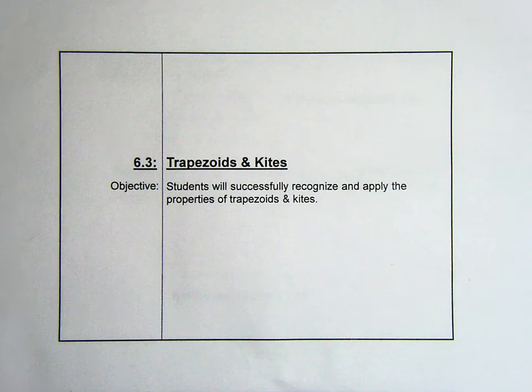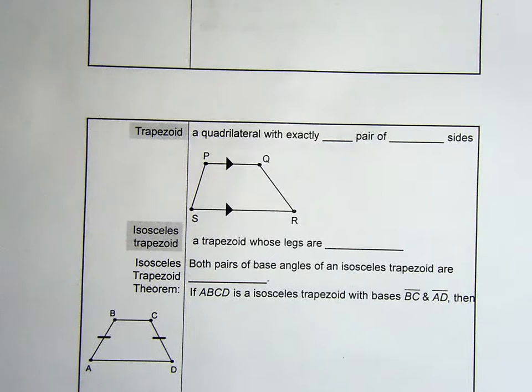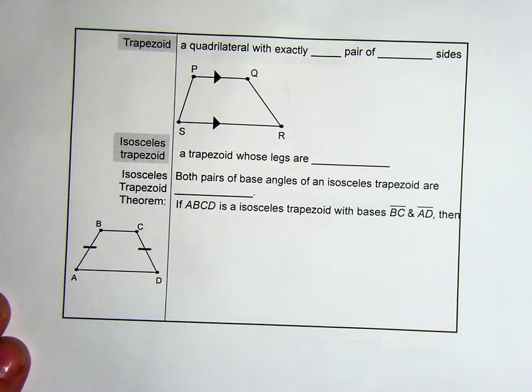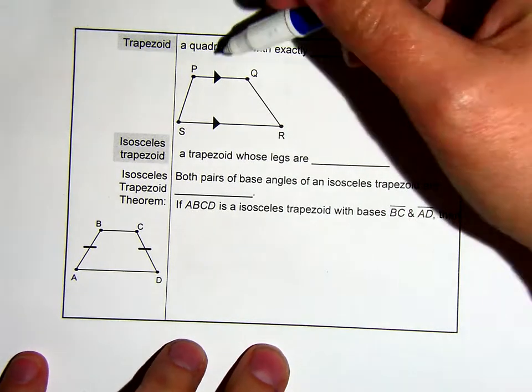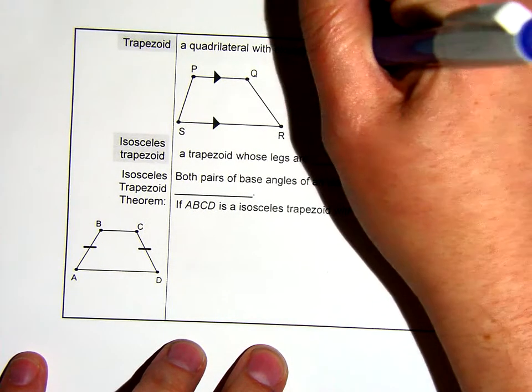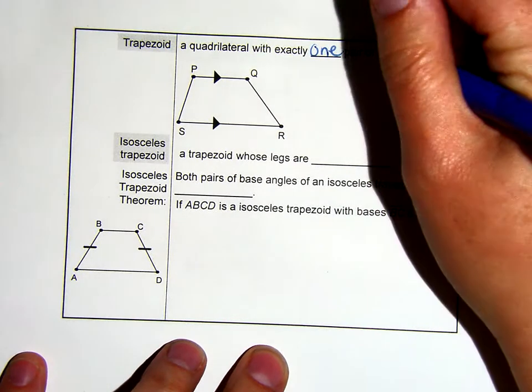Section 6.3 Trapezoids and Kites. Our objective is students will successfully recognize and apply the properties of trapezoids and kites. A trapezoid is a quadrilateral with exactly one pair of parallel sides.